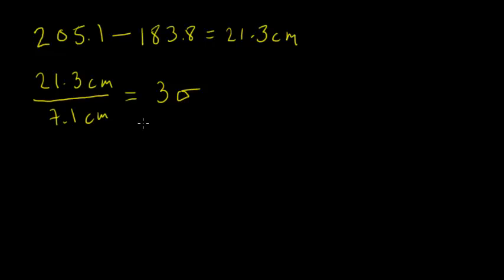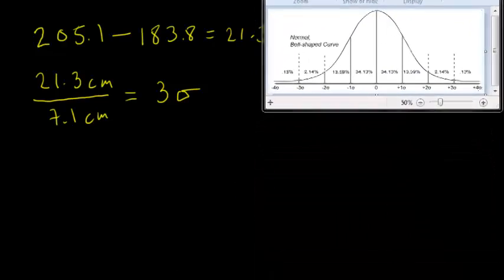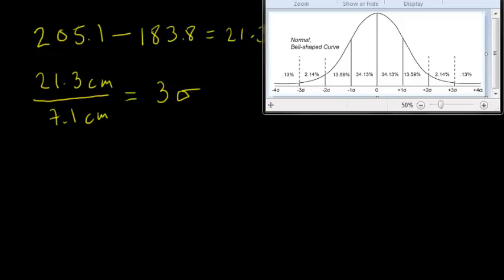So we know that we're looking for the number of men who could be expected to be 3 standard deviations or above, higher than the mean. And so we're going to take a look at this bell-shaped curve, this normal distribution.